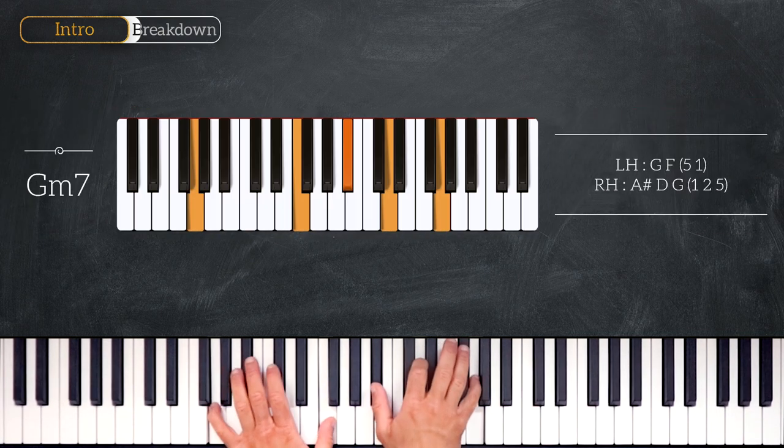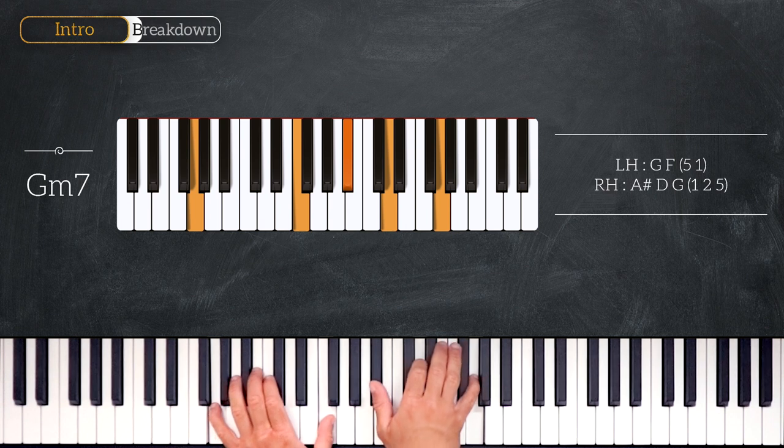Then we'll play G minor 7, playing G, F on the left and B flat D, G on the right.